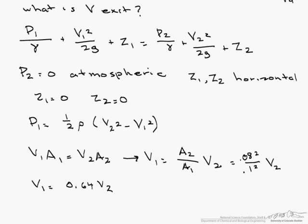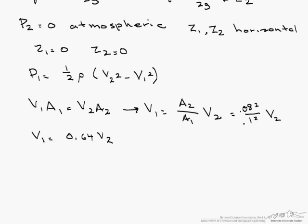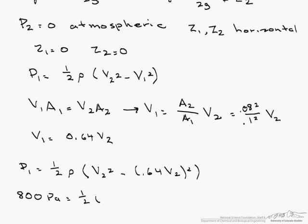So we can substitute that into our equation, such that p1 equals 1 half times rho v2 squared minus 0.64v2 squared. And when we put our numbers in, we have 800 pascals equals 1 half times the density, 1.23 kilograms per meter cubed, times v2 squared minus 0.64v2 squared. Remember that 0.64 is squared as well. So this ends up being 0.59v2 squared.